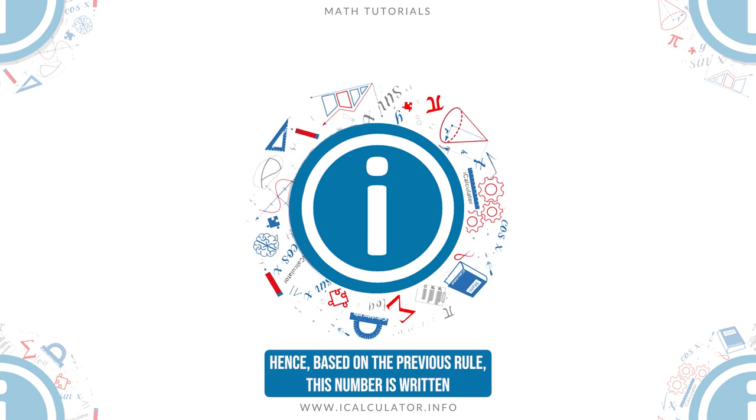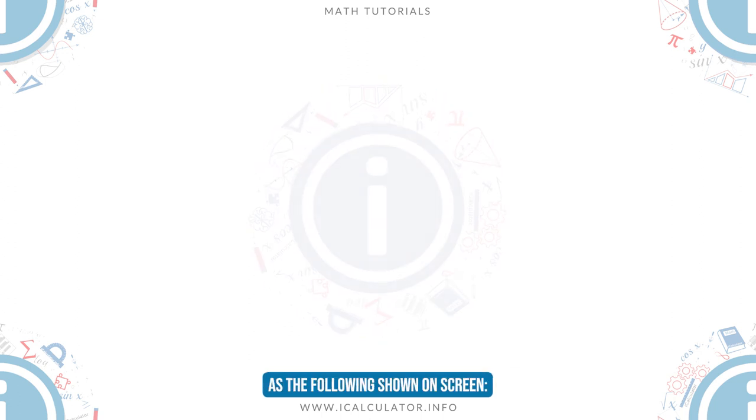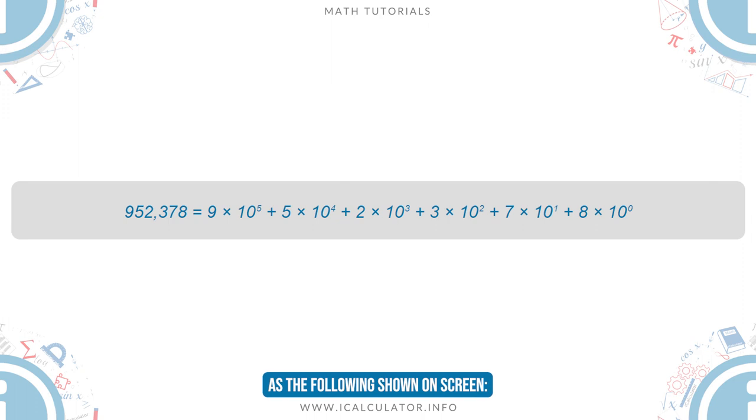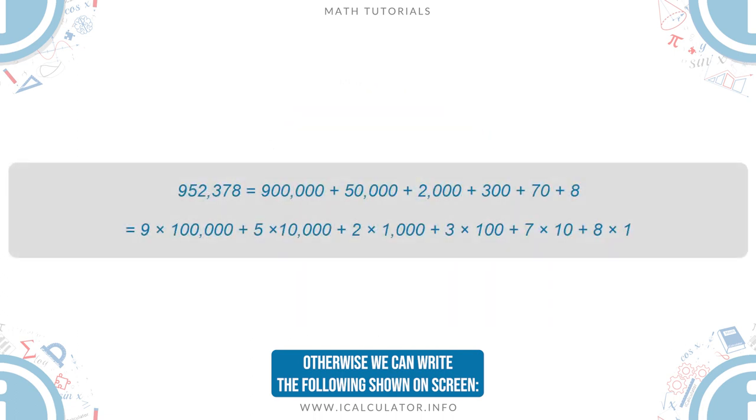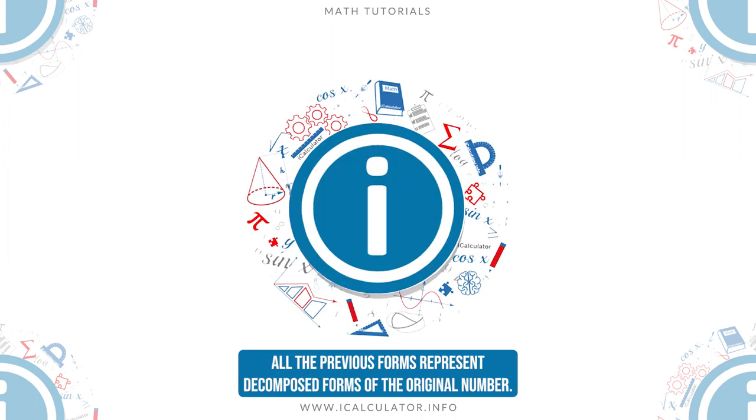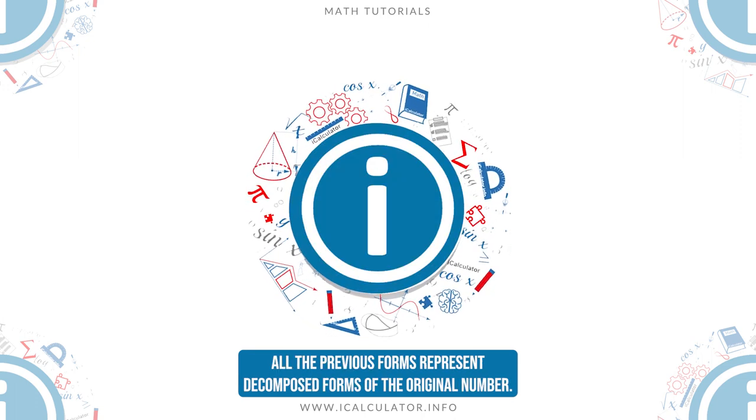Hence, based on the previous rule, this number is written as the following shown on screen. Otherwise, we can write the following shown on screen. All the previous forms represent decomposed forms of the original number.